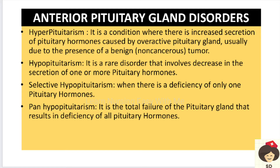Coming to anterior pituitary gland disorders, there are two main disorders. One is hyperpituitarism — as the name suggests, there is overproduction of pituitary hormones due to an overactive pituitary gland, which can be caused by a benign tumor of the pituitary, as tumor tissue also produces more hormones. The other is hypopituitarism, which means decreased secretion of pituitary hormones.